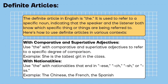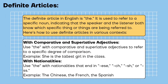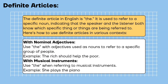With comparative and superlative adjectives: use 'the' to refer to a specific degree of comparison. Example: she is the tallest girl in the class. With nationalities: use 'the' with nationality adjectives that end in -s, -ch, -sh, or -ss. Example: the Chinese, the French, the Spanish. With nominal adjectives: use 'the' with adjectives used as nouns to refer to a specific group of people. Example: the rich should help the poor. With musical instruments: use 'the' when referring to musical instruments. Example: she plays the piano.